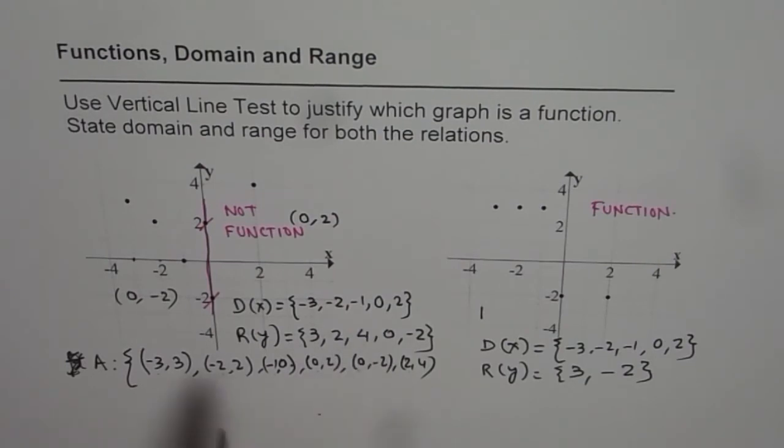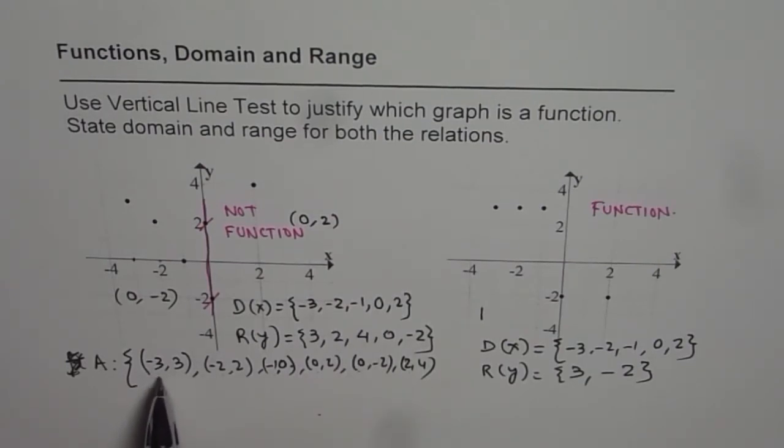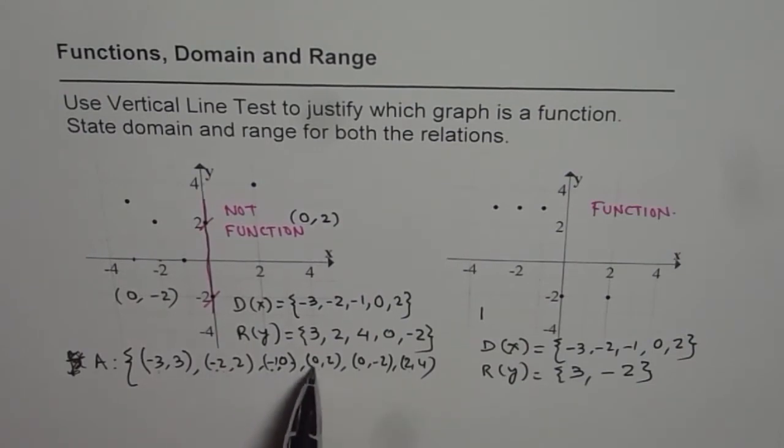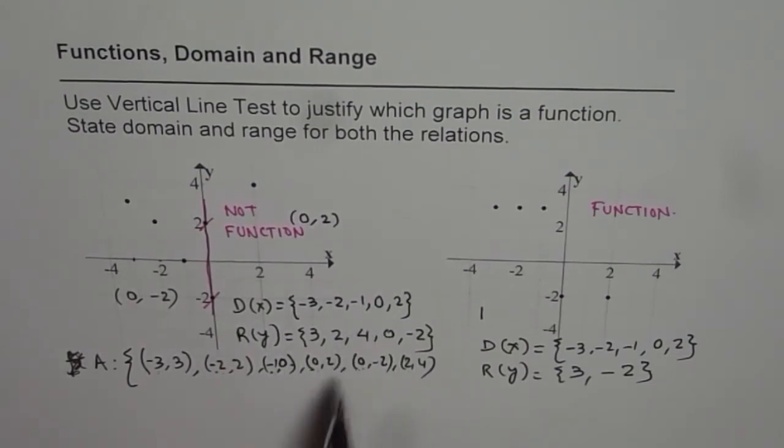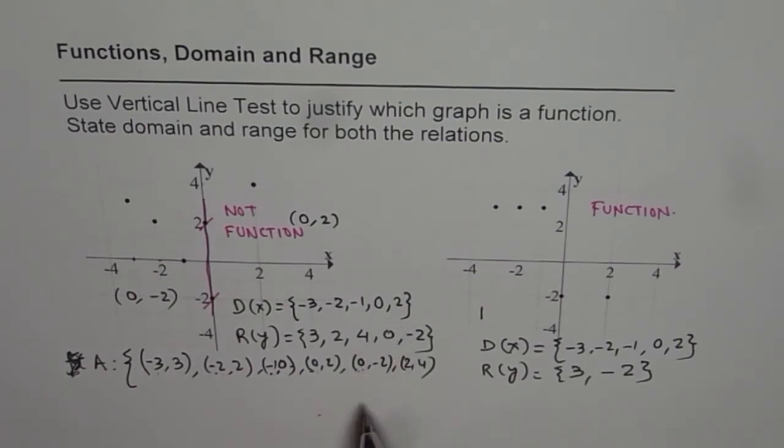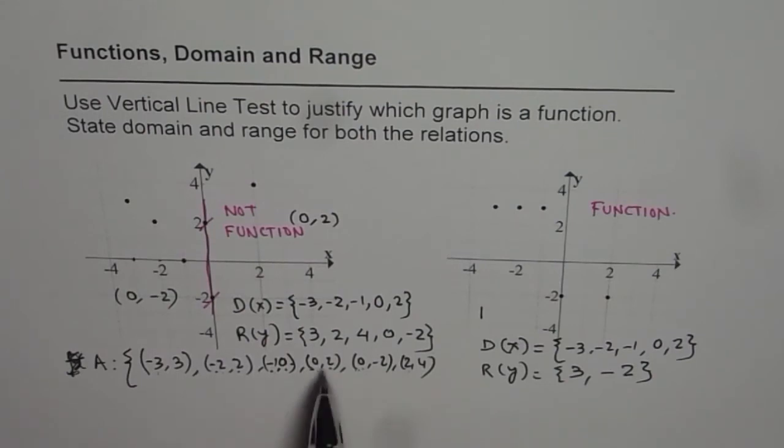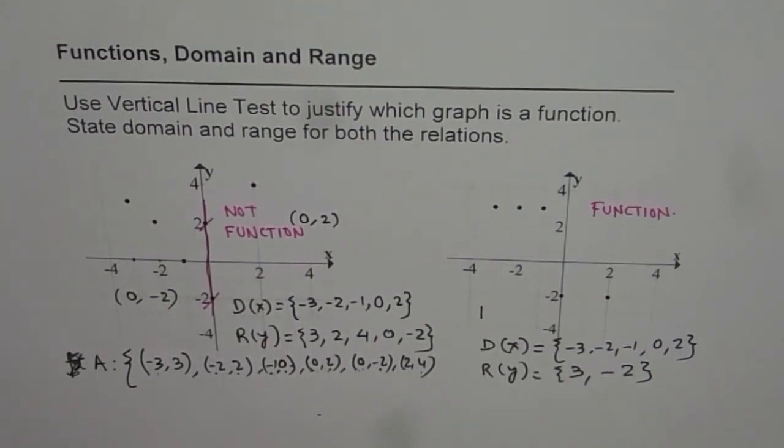The x values are minus three, minus two, minus one, zero, zero (since zero repeats), and then we have two. And the range values are the y coordinates, which is three, two, zero, two (two repeats), minus two and four. Perfect.